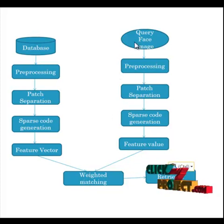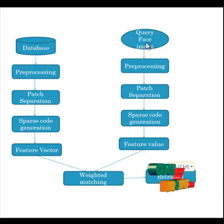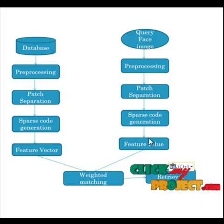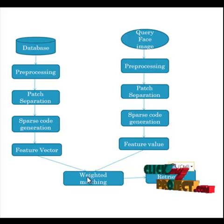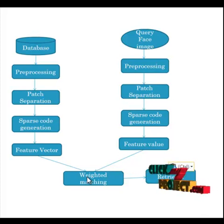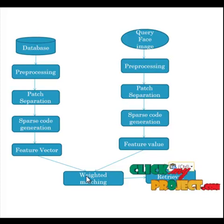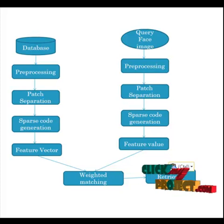In weighted matching, we give the testing images. For the testing images, we also apply pre-processing, batch separation, sparse code generation, and feature extraction, which are then passed to the weighted matching step. In weighted matching, we find the similarity between the database images and the testing images. After finding the similarity, it will go to the retrieval process, where the similar images from the database are retrieved.